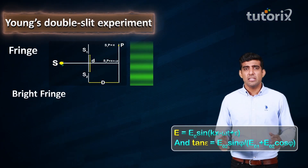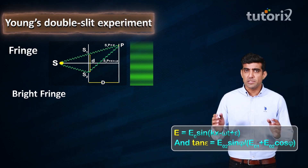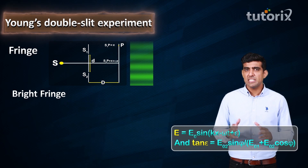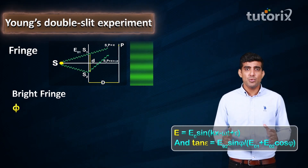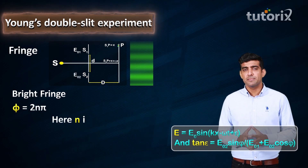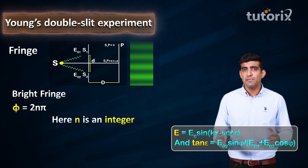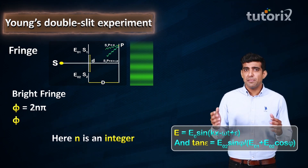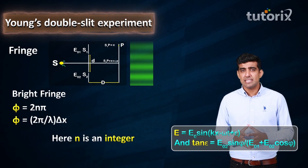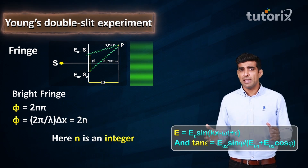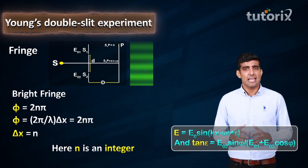For a bright fringe, the value of E0 should be maximum. Therefore, cos φ should be maximum, which has a maximum value of 1. Therefore, φ = 2Nπ. This can also be expressed in terms of path length difference: since phase difference equals (2π/λ)·delta X = 2Nπ, the path length difference delta X can be written as N·lambda.